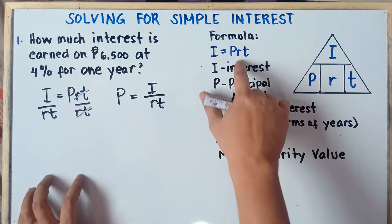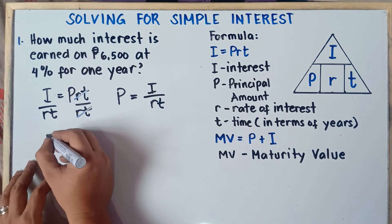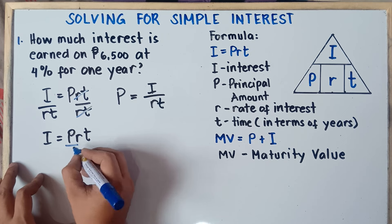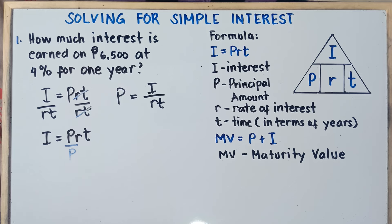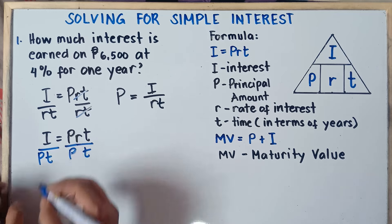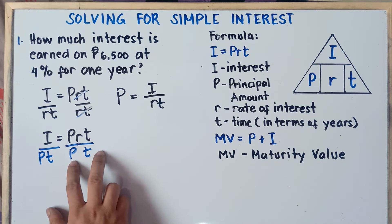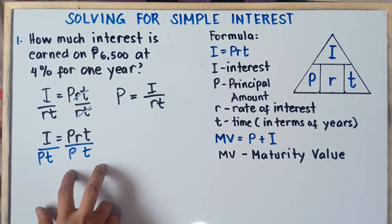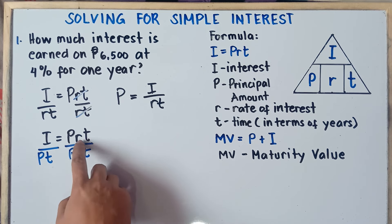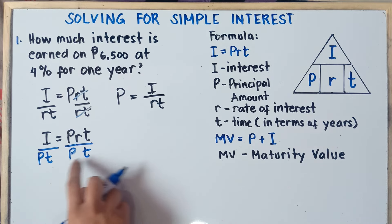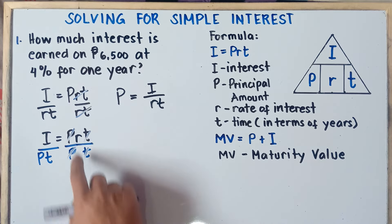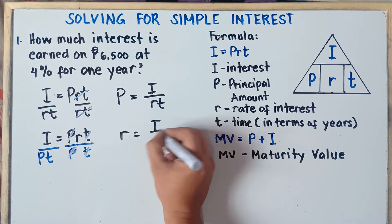Now what if you are looking for rate R? Starting again from I equals PRT, to find rate, simply divide both sides by PT so that the remaining equation on the right side of the equal sign will be only R. Therefore, R is equal to I over PT.